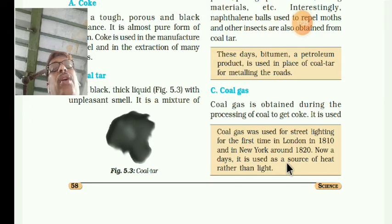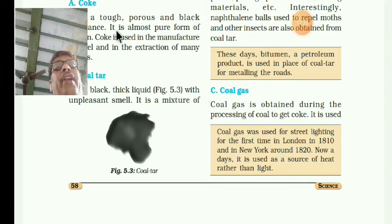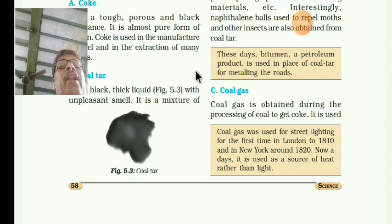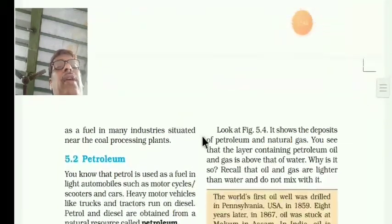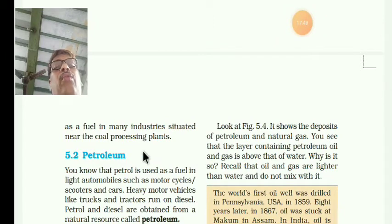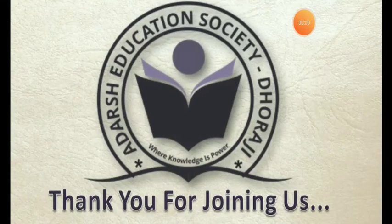So dear students, these are all about coal, exhaustible natural resources, and inexhaustible natural resources. We have done the introduction. Go through this and underline some important points. The next heading is Petroleum — we will go for the next heading, Petroleum. Thank you for joining us, bye-bye.